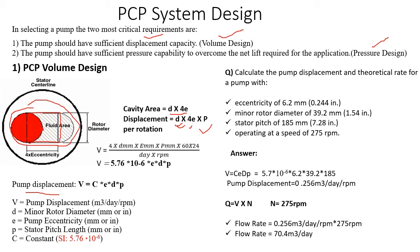Assuming one rotation per minute for a full day of operation, we get the formula: pump volume displacement equals constant C times eccentricity times minor diameter of rotor times pitch length. You can apply a conversion constant for SI units, and if you want flow rate in barrels per day per RPM, simply convert from cubic meters per day to barrels per day. This pump displacement value is for one RPM.